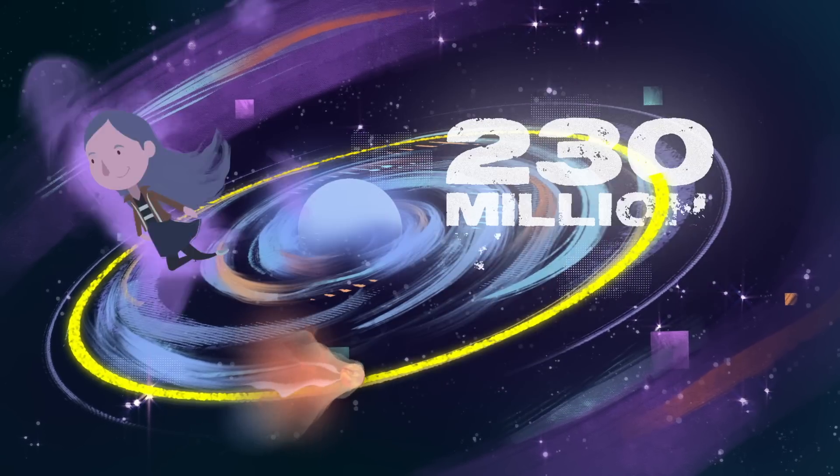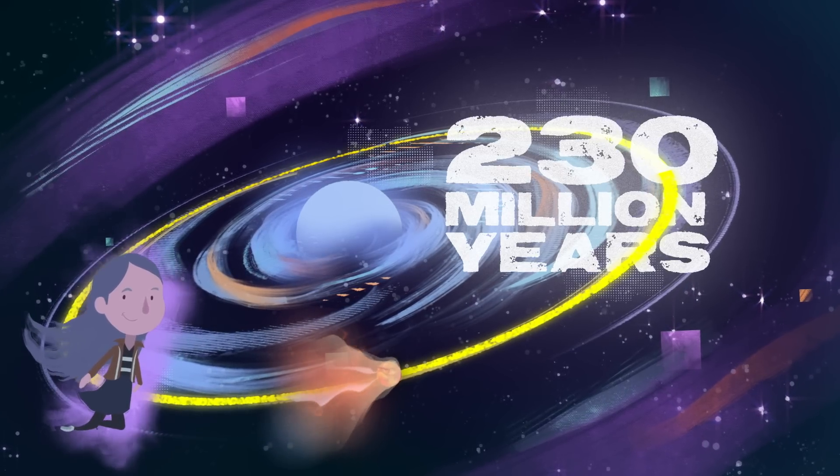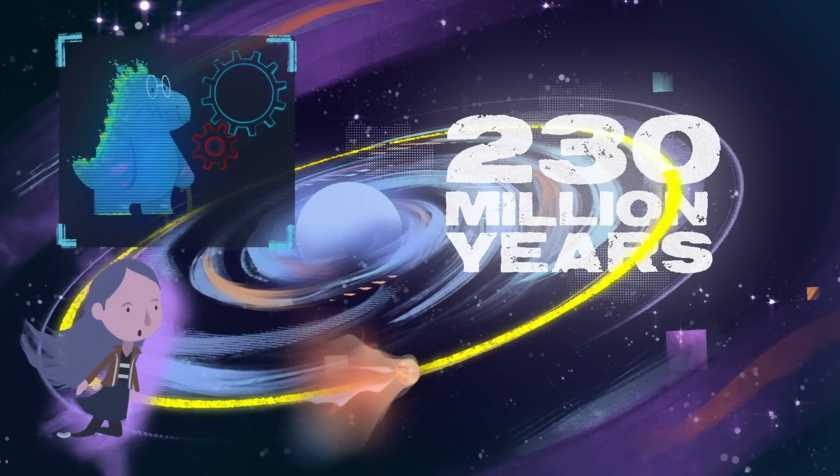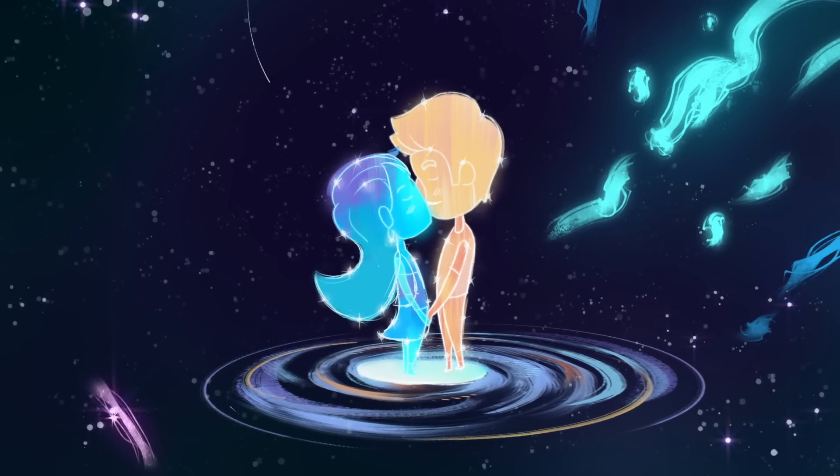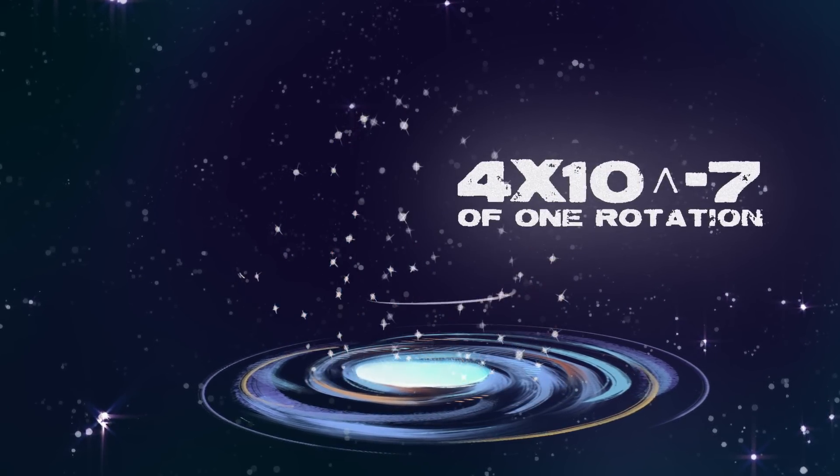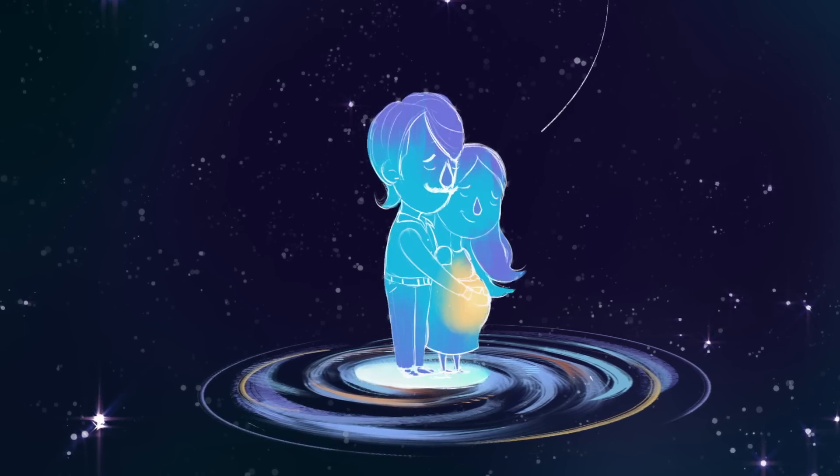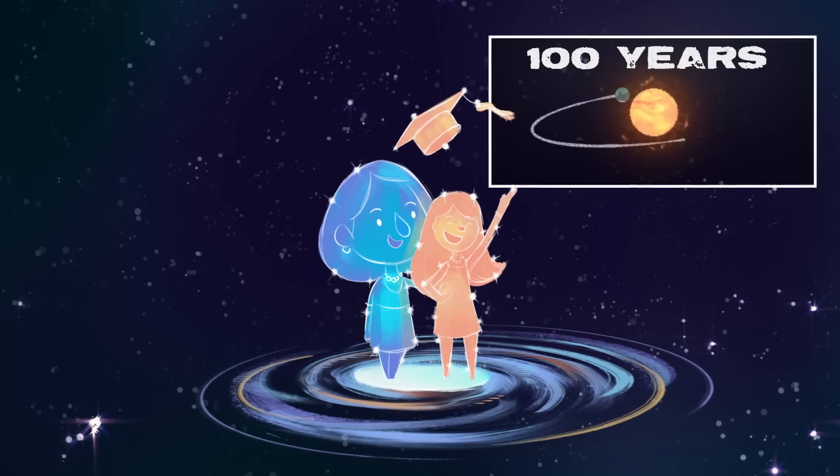One full orbit takes 230 million years, meaning we've aged little more than one galactic year since the first dinosaurs. In your 100 years, you've witnessed four ten-millionths of one rotation. That's still 600 billion kilometers, or 2,200 round trips between the Earth and Sun.